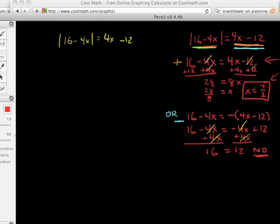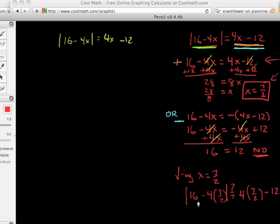So, move it down a little bit, this is checking. Checking x equals 7 halves. We have the absolute value of 16 minus 4 times 7 halves. Is that equal to, and I like to put a question mark right there, 4 times 7 halves minus 12. And we have 4 times 7 is 28. If we have 28 halves, we really have 14. And we're taking 14 away from 16, and is that equal to, and taking the absolute value, is that equal to, here we have 4 times 7 is 28 halves again, so we have 14 minus 12. Well, this is definitely true. The absolute value of 2 is equal to 2, so the answer is yes, so it checks.